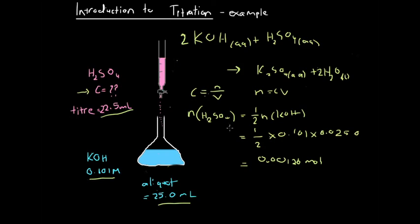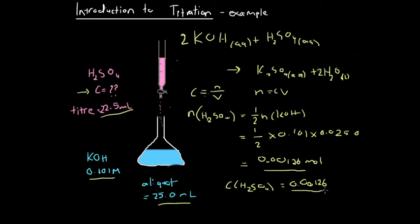Now we know the moles of sulfuric acid and the volume of sulfuric acid, so we substitute both values into the concentration equation. The concentration of sulfuric acid equals the moles of sulfuric acid divided by the volume, which is 22.5 millilitres or 0.0225 litres. Working this out gives a concentration of 0.0561 moles per liter. That is our final answer.